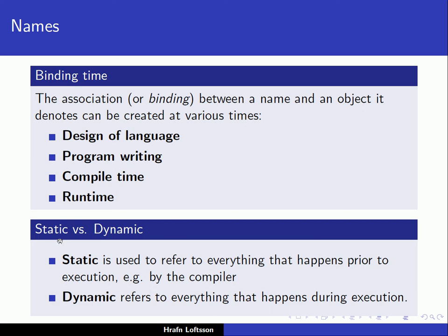In this regard, there are two important terms: static and dynamic. Static refers to everything that happens prior to execution — that is, at compile time. Dynamic refers to everything that happens during execution. It's important to understand the difference between these two terms.